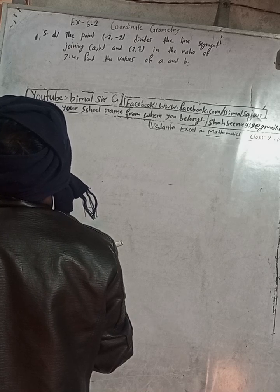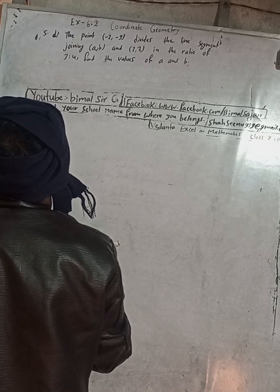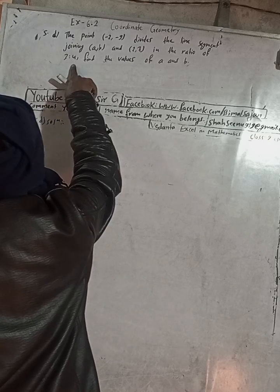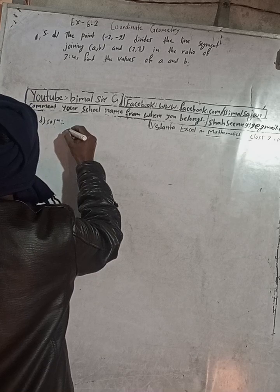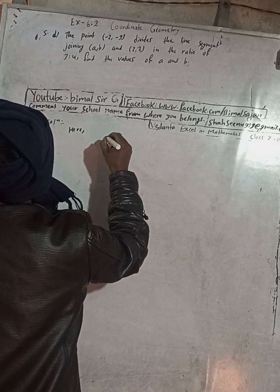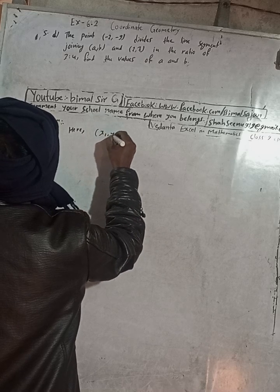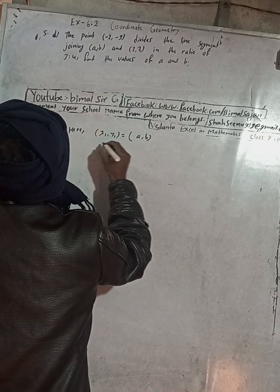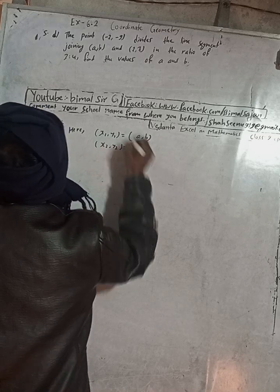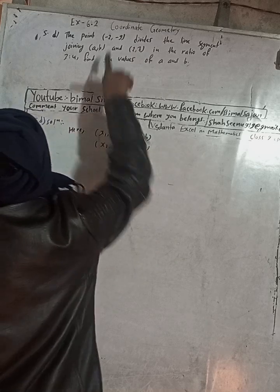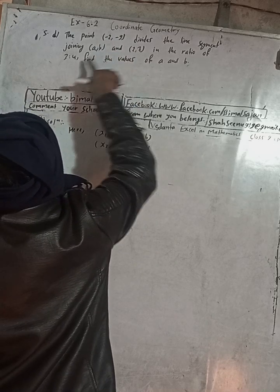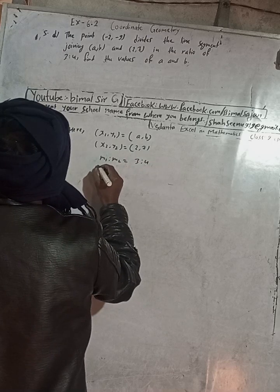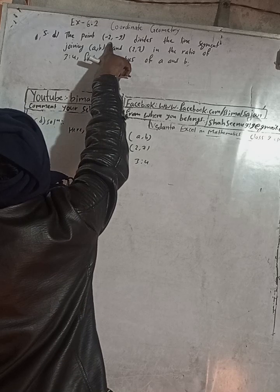Now you can write here: the point (-2, -9) divides the line segment joining (a, b) and (2, 7) in the ratio 3:4. So you can write x1, y1 is equal to (a, b) and x2, y2 is equal to (2, 7). This is our ratio, that means m1:m2 is equal to 3:4. And (x, y), this is (x, y), that is (-2, -9).